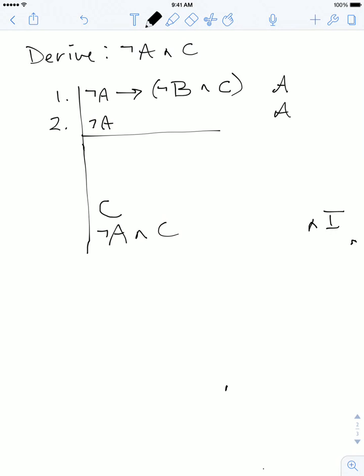Now we just ask the same question again: does the sentence C appear anywhere as a component in our assumptions? And the answer here is yes it does—it's right there. So now our task just becomes to eliminate all of the logical connectives in that sentence so we can derive C.